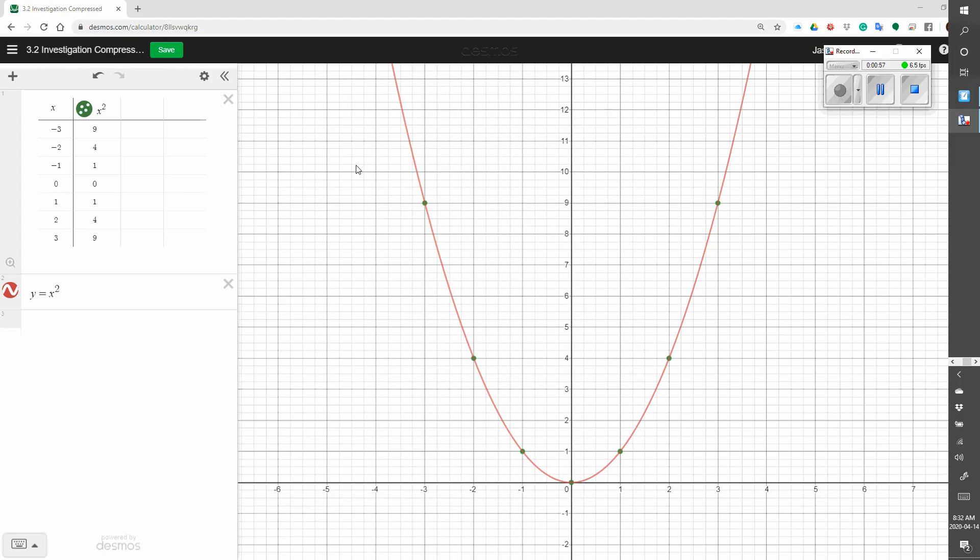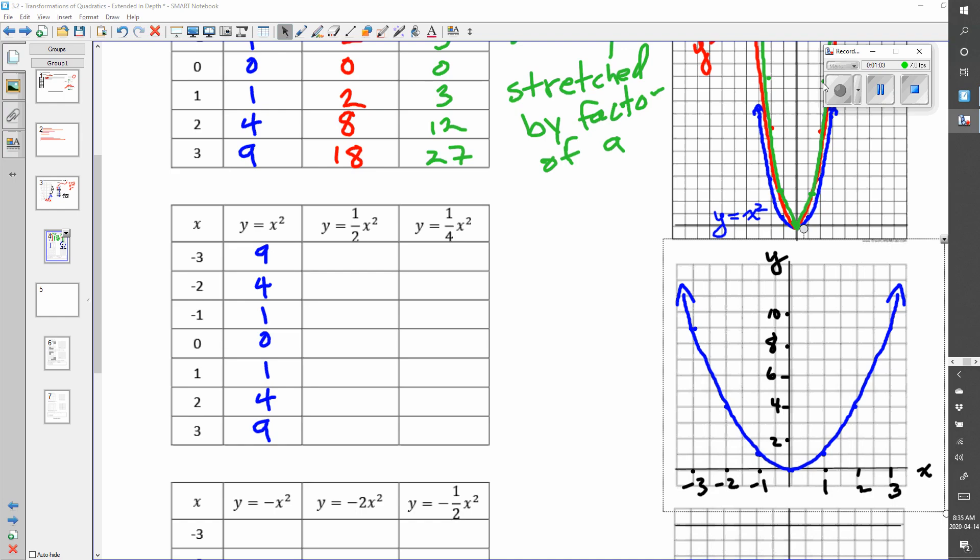Alright, so for our basic graph, we plot our points. Let's do that right now on our graph. And now, this is your base image for y is equal to x squared.